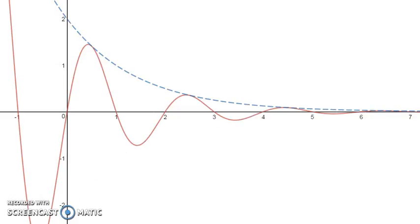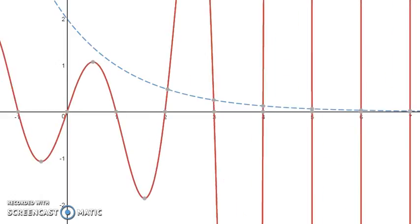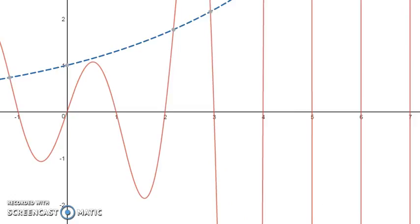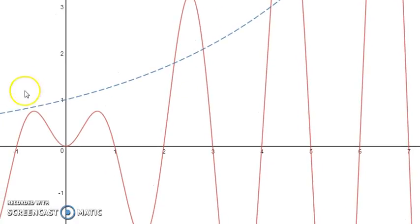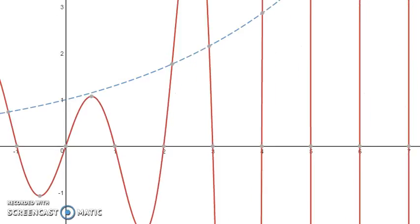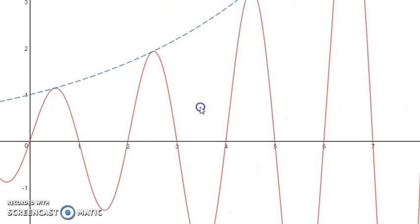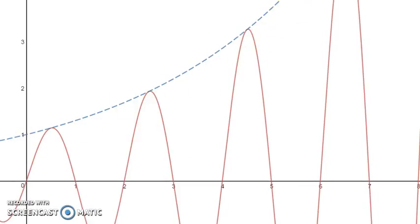We could also try something that had a positive growth rate. For example, 1.3 to the x. So now we have an exponentially increasing amplitude, and again the graph is oscillating above and below these functions using the amplitude function to describe the amplitude of the oscillations.